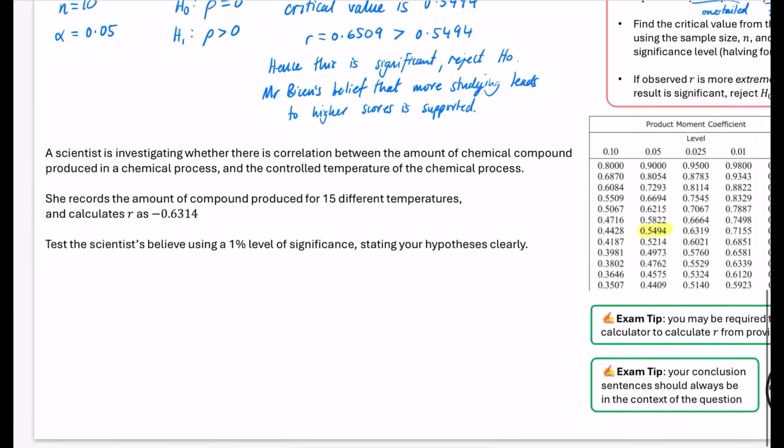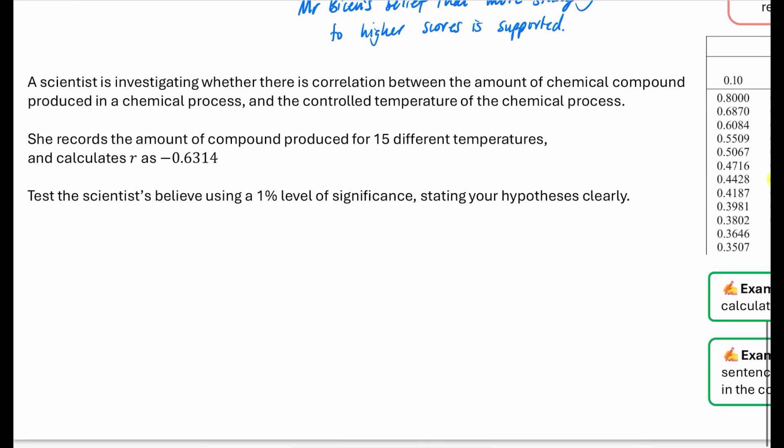And now we're going to have a look at this second example to finish off this video. A scientist is investigating whether there is correlation between the amount of chemical compound produced in a chemical process and the controlled temperature of the chemical process. She records the amount of compound produced for 15 different temperatures and calculates R as negative 0.6314. So, there are 15 different temperatures. And let's go with our null hypothesis that we know is going to be that the correlation is zero. And let's think carefully about this alternative hypothesis. The scientist believes that there is correlation. So, the alternative hypothesis is that there is correlation. Which means that it is a two-tailed test.